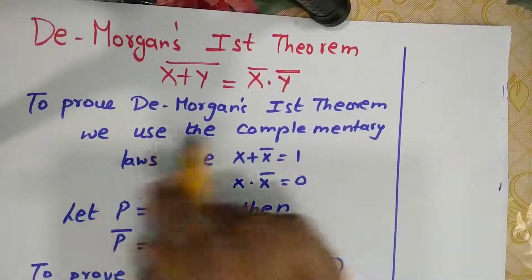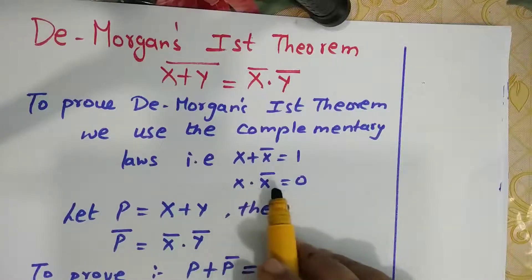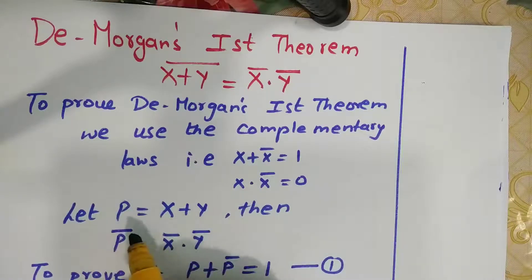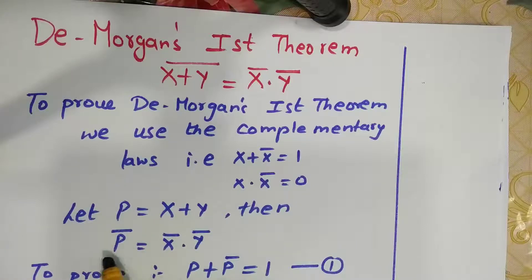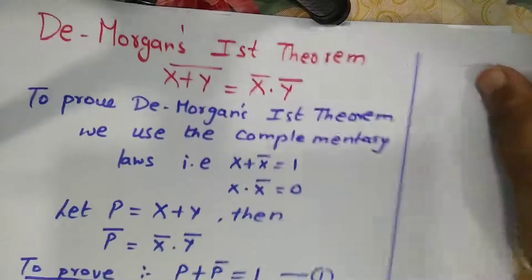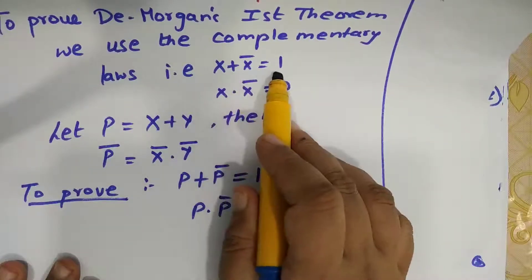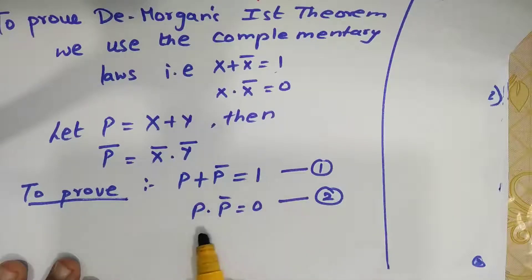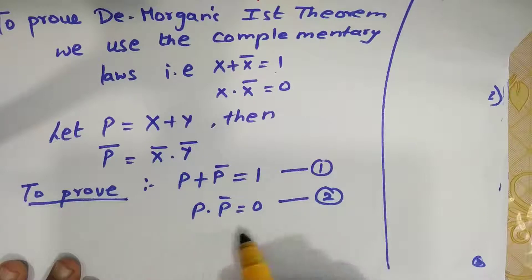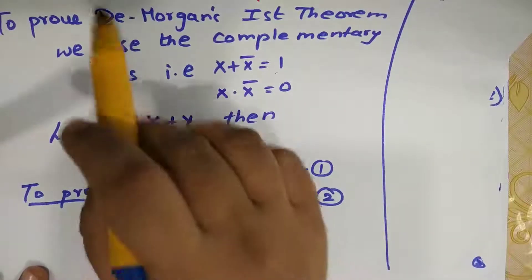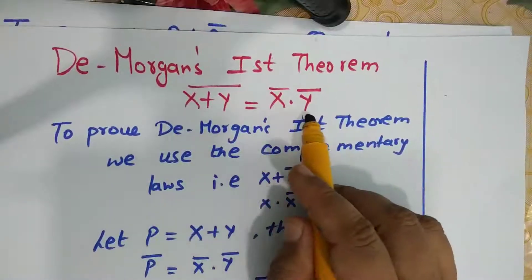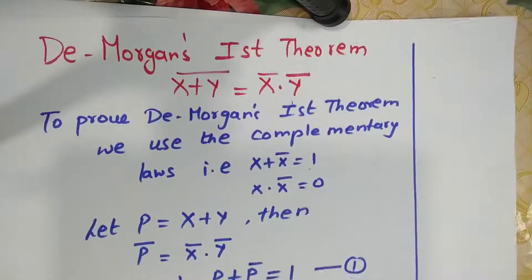To prove De Morgan's first theorem, we use the complementary laws: x + x' = 1 and x · x' = 0. We assume a variable p where p = x + y. Because p is x + y, when you take p's complement, p' becomes x' · y'. We are going to prove that p + p' = 1 and p · p' = 0 using this assumption.